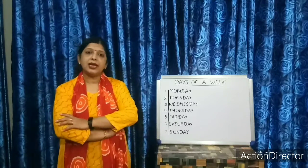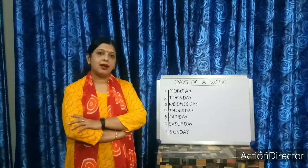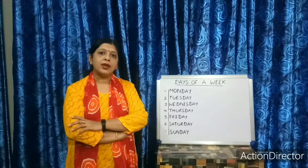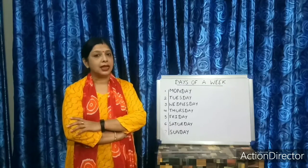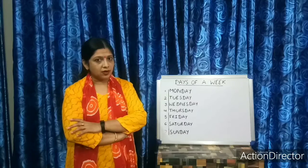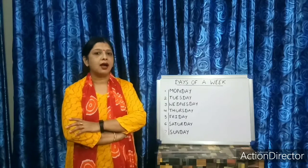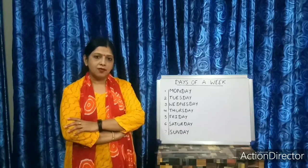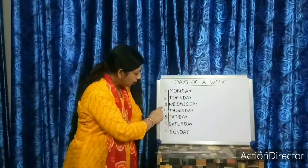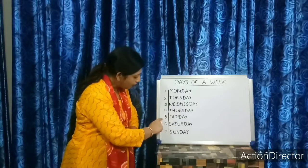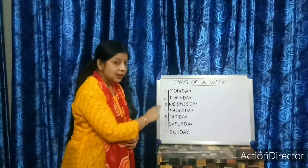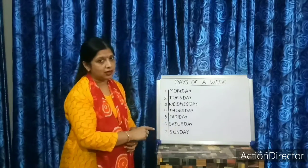So how many days are there in a week? Do you know? How many days are there in a week? There are seven days in a week — 1, 2, 3, 4, 5, 6, and 7. There are seven days in a week.